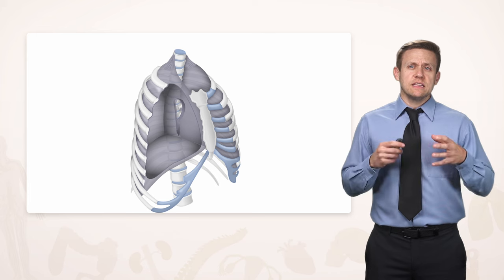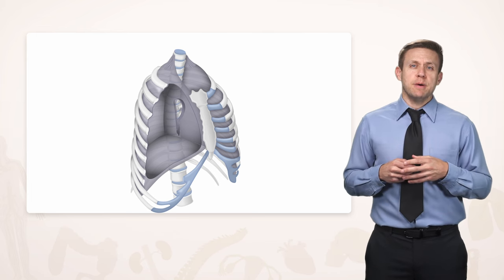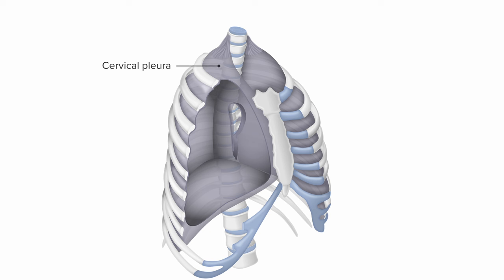If we take the lungs out to see the parietal pleura a little better, we can see how the cervical pleura is really high up, right at the superior thoracic aperture. We also see the costal pleura, as the name implies, right in the area of the ribs. The diaphragmatic pleura sits over the superior surface of the diaphragm, and just where we expect it, the mediastinal pleura is right at the level of the mediastinum.